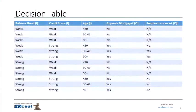The outputs are going to be provided by the stakeholders. Now it's a simple exercise of reading each row: we have an applicant with a weak balance sheet, a weak credit score, and they're under 30. Are we going to give them a mortgage? No way. Do they require insurance? That's a moot point — if they're not getting the mortgage, it doesn't matter. So we can run through these one by one asking our stakeholders what about this scenario, and they provide answers. It's a brute force approach, but the table is clear, easy to read, and it's complete.